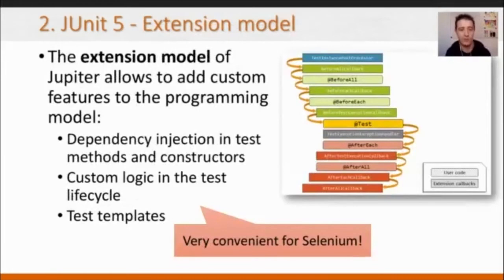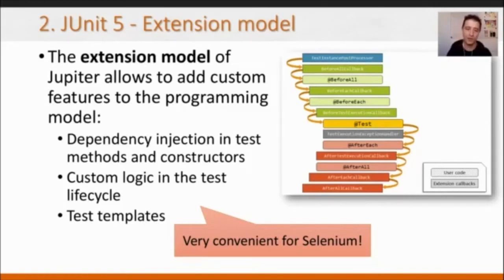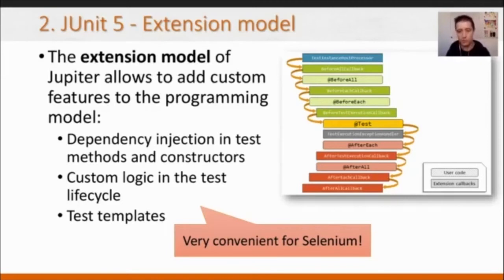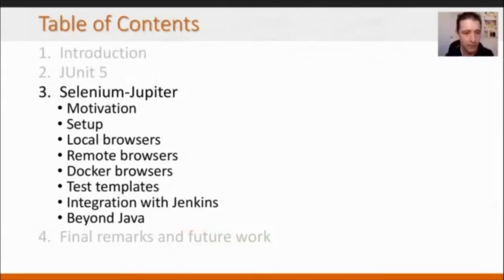Last but not least about JUnit 5: it has an extension model. JUnit 5 provides Jupiter as a brand new programming model, but also as an extension model. This extension model allows creating new features on top of Jupiter. When I wrote the book in 2017, I realized this extension model was very convenient for Selenium, so I created a tool using this extension model to create Selenium tests with JUnit 5.